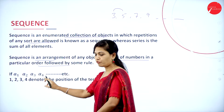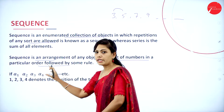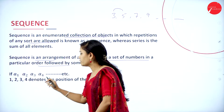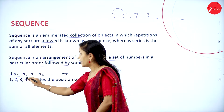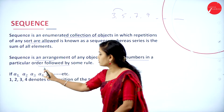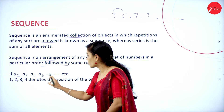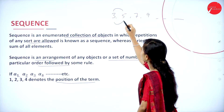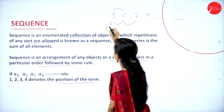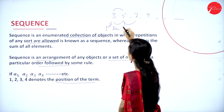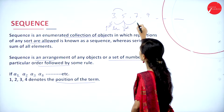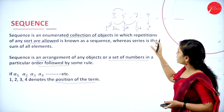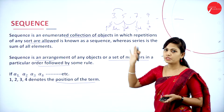If we have elements a1, a2, a3, a4, the numbers 1, 2, 3, 4 denote the location or position of the term. So in a sequence we can find the position of each term — this is the first term, second term, third term, and fourth term.